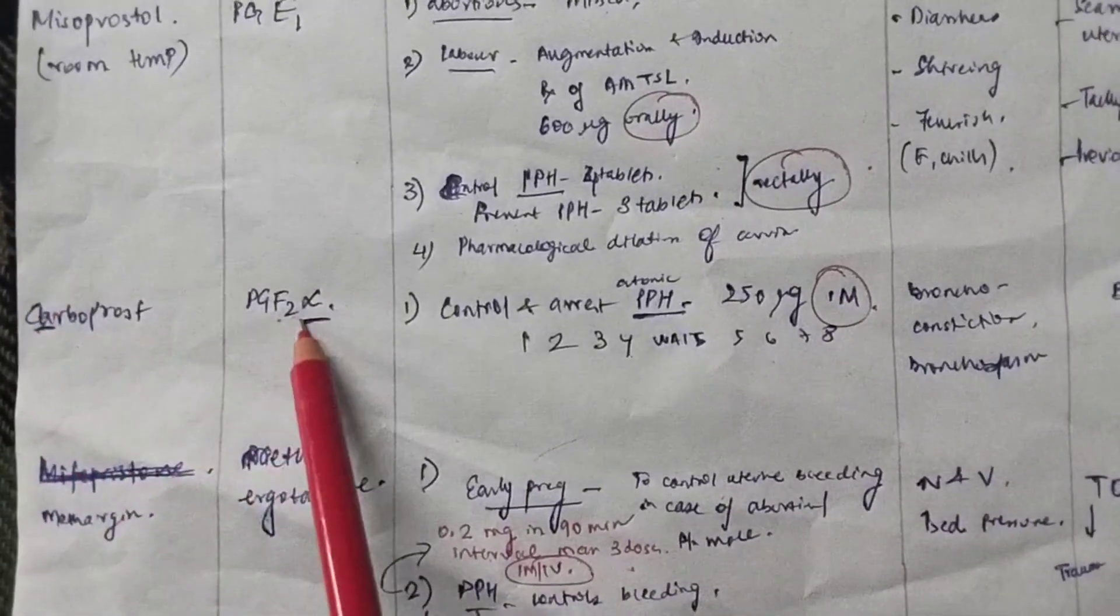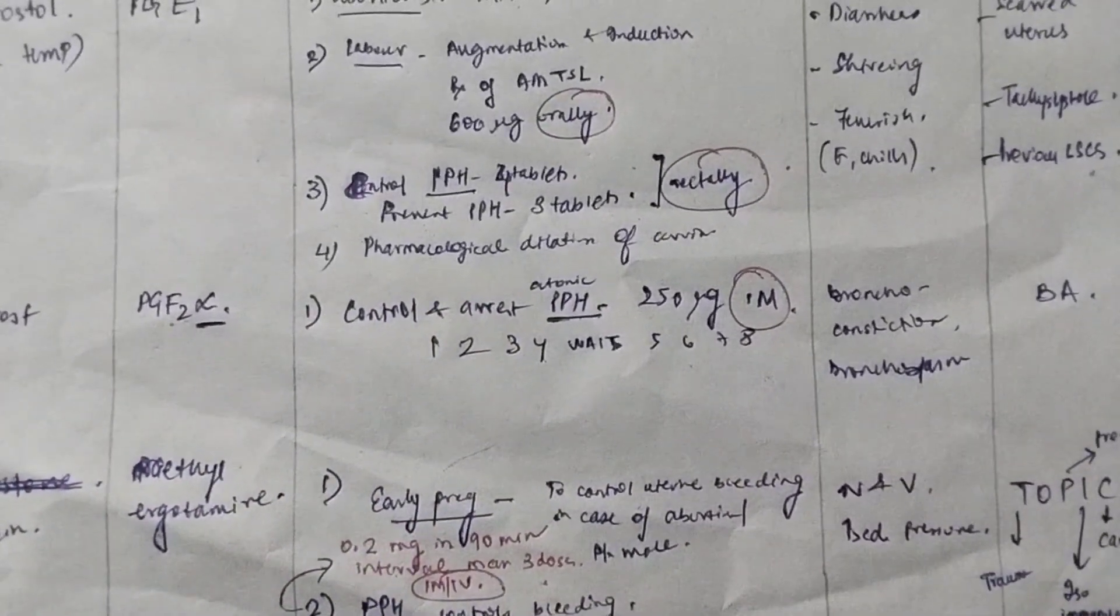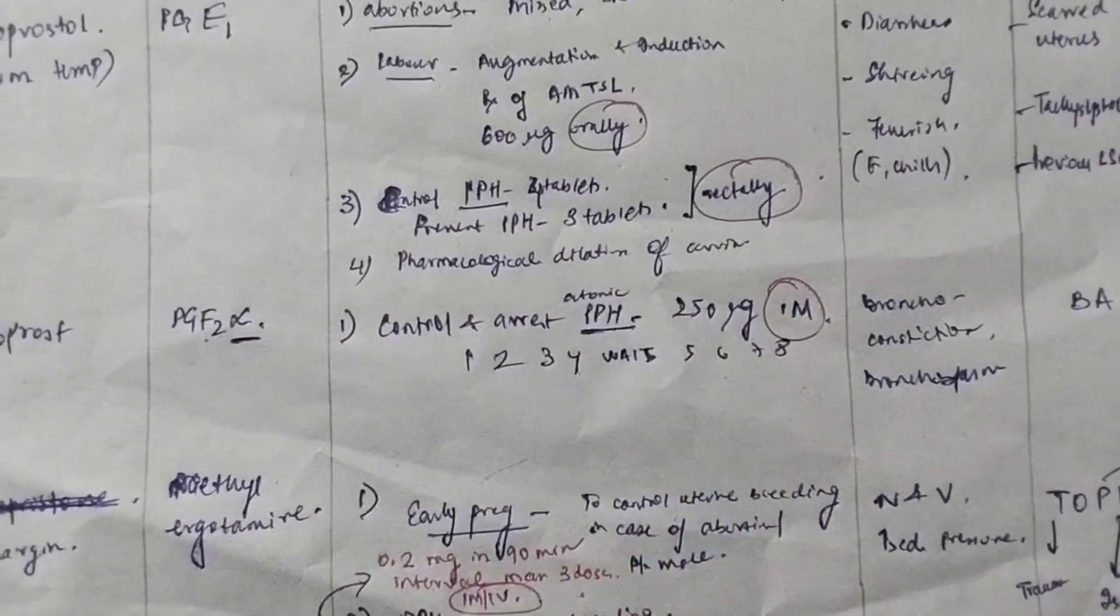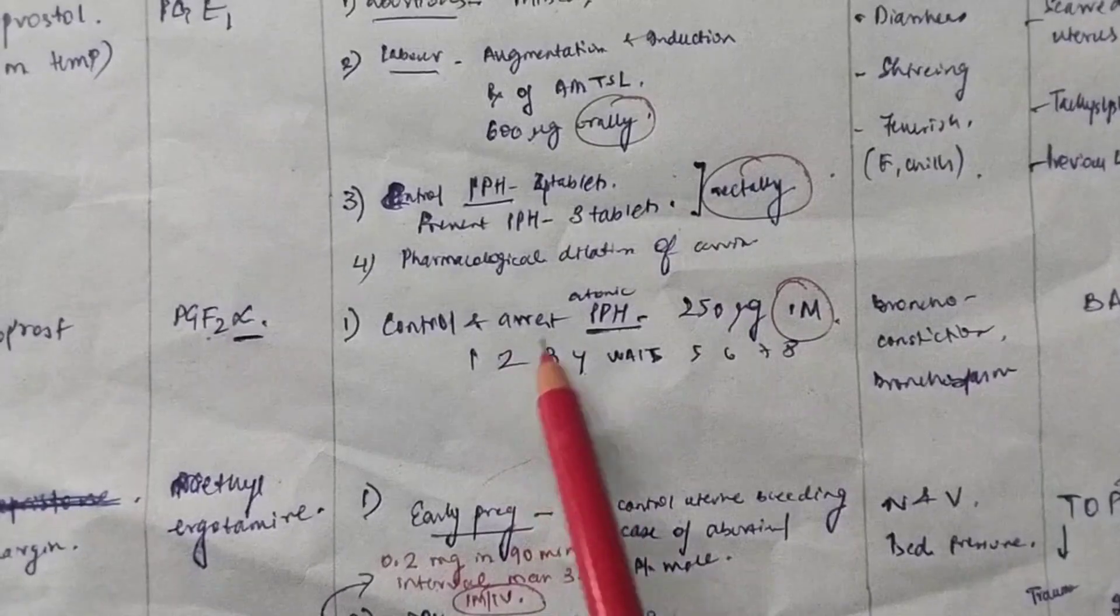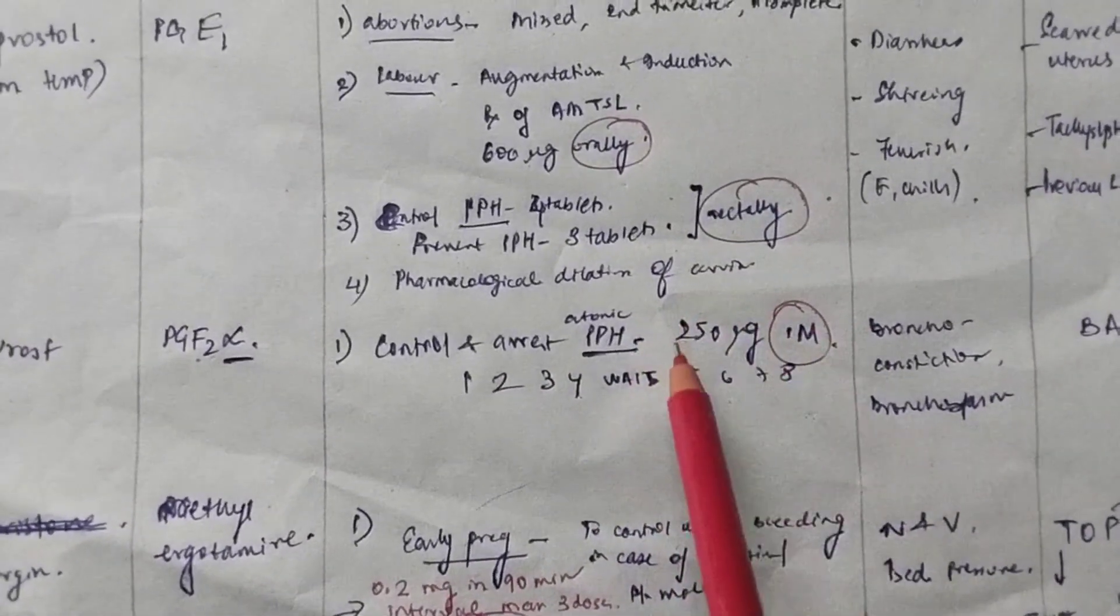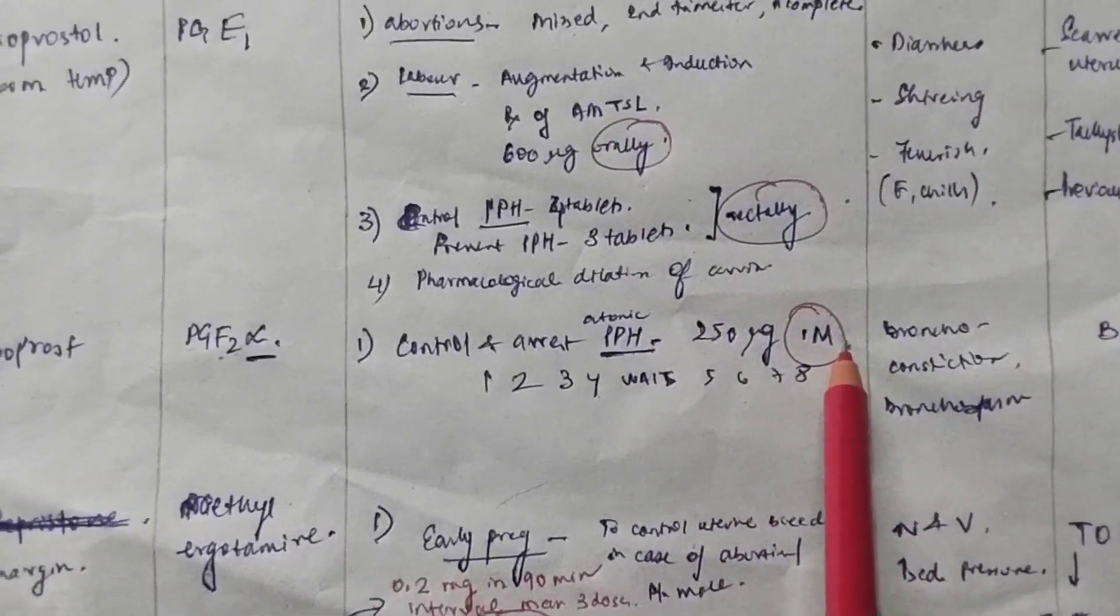Now, come to carboprost. See, C, A for alpha, PGF2 alpha. They have only one use. That is control and arrest of PPH. And this is a very important use. Basically, you have to start with one dose. Give two dose, three dose, four dose. Then you have to wait and watch. Then five, six, seven, eight dose. One dose is 250 microgram. And you should give it IM. Never give it IV. Never give carboprost IV.